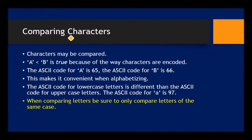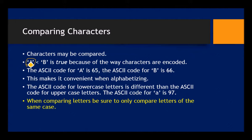We can compare characters — we don't have to restrict ourselves to numbers only. Characters are stored in C++ as binary numbers, and when comparing characters we're talking about comparing them alphabetically. For example, we can say is character 'A' less than character 'B' — and it will return true because alphabetically A occurs before B.